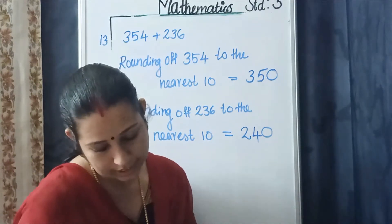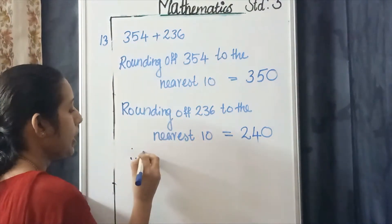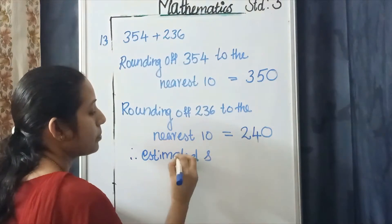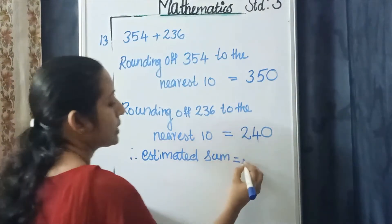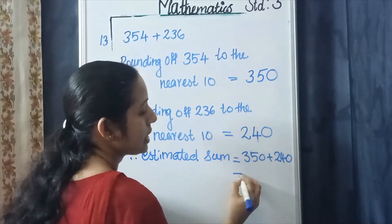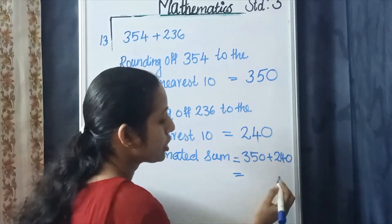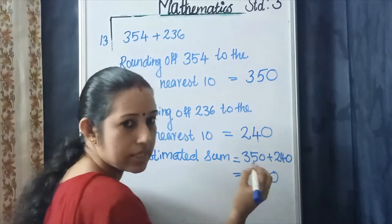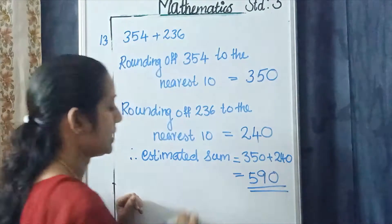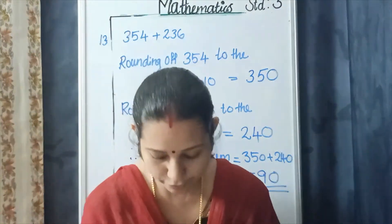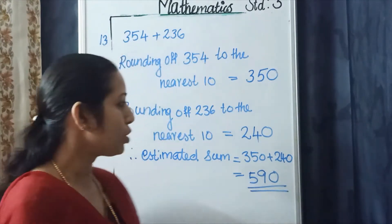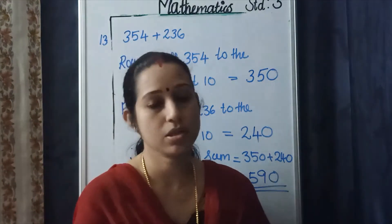Next step. Therefore, the estimated sum is equal to just add 350 plus 240. Starting from the ones place: 0 plus 0 is 0, 4 plus 5 is 9... 4 plus 4 is 9... wait, 4 plus 4 is 9, then 3 plus 2 is 5. So the estimated sum of 354 plus 236 is equal to 590.